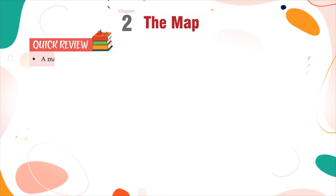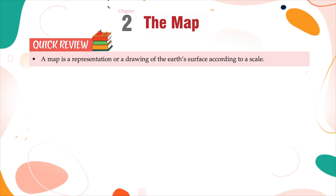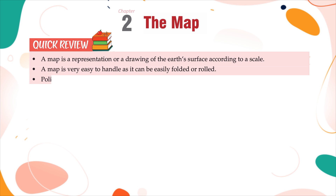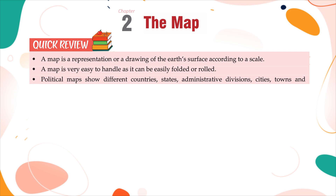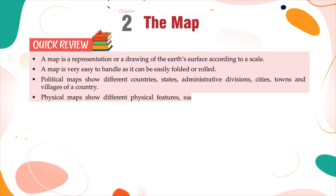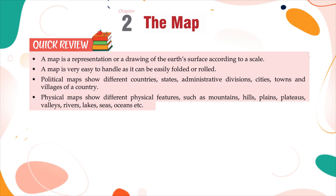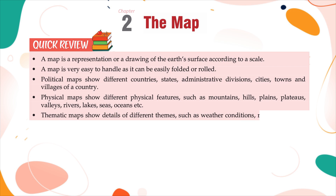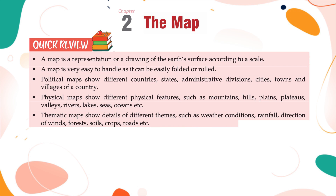Quick Review. A map is a representation or a drawing of the earth's surface according to a scale. A map is very easy to handle as it can be easily folded or rolled. Political maps show different countries, states, administrative divisions, cities, towns, and villages of a country. Physical maps show different physical features such as mountains, hills, plains, plateaus, valleys, rivers, lakes, seas, oceans, etc. Thematic maps show details of different themes such as weather conditions, rainfall, direction of winds, forests, soils, crops, roads, etc. A globe is a three-dimensional sphere while a map is two-dimensional.